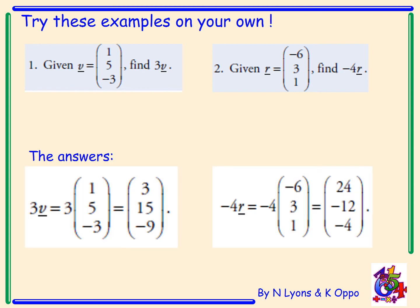The answers: 3v is 3, 15, minus 9, and negative 4r is 24, negative 12, negative 4.